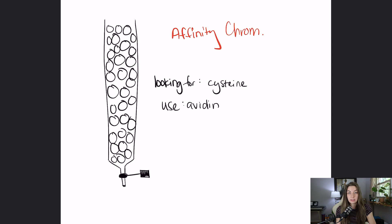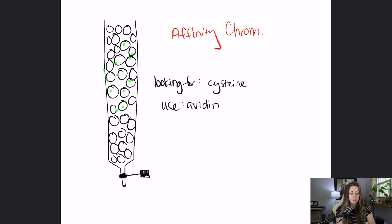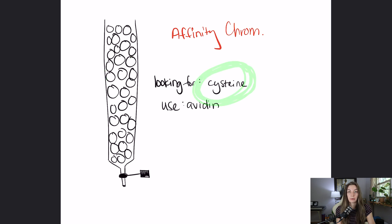So the important thing to keep straight is what's coming out first — what's eluting first — and for different types of chromatography, what are the beads going to be? For affinity chromatography, the beads are going to be something that has a high affinity for the molecule you want to separate out.